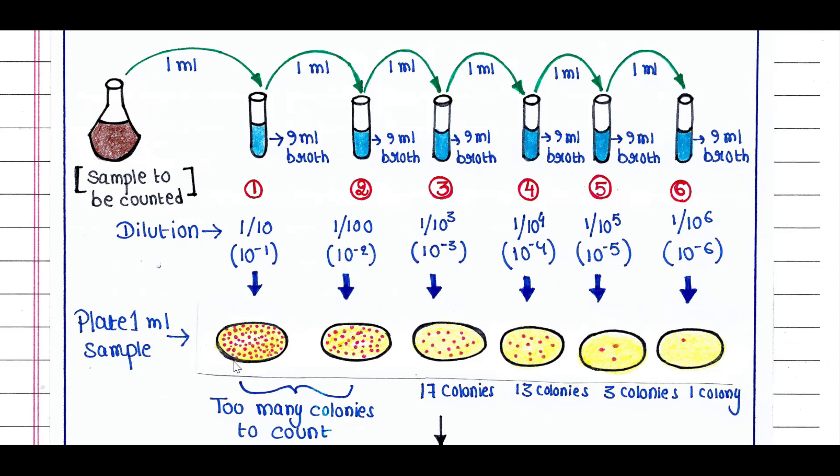Now you can see the result. In the first two plates, we have too many colonies, so we're not going to count them. In plate 3, we have 17 colonies. In plate 4, we have 13 colonies. In plate 5, 3 colonies. And in plate 6, 1 colony.